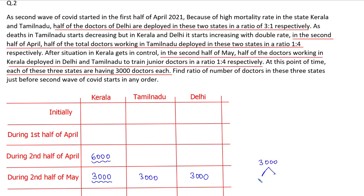These 3000 doctors are distributed between Delhi and Tamil Nadu in a ratio of 1:4. After deducting by half, Kerala has 3000, meaning before that it was 6000. Dividing 3000 in ratio 1:4: one-fifth of 3000 is 600, so 600 doctors are transferred to Delhi whereas the remaining 2400 doctors are transferred to Tamil Nadu. So before the second half of May, Tamil Nadu had 3000 minus 2400 equals 600 doctors.